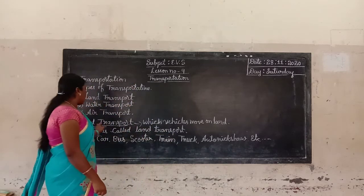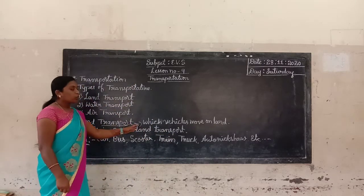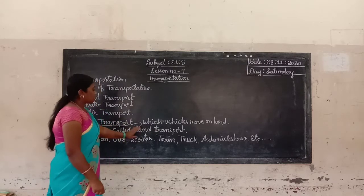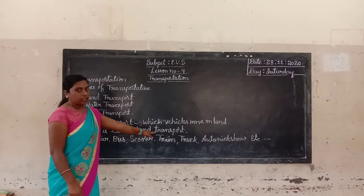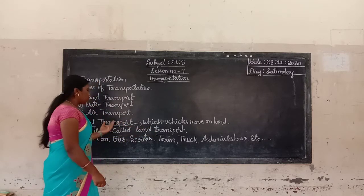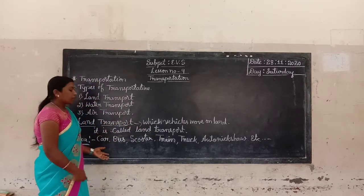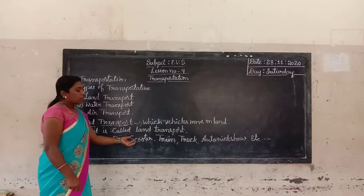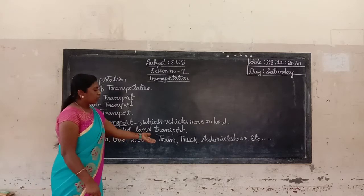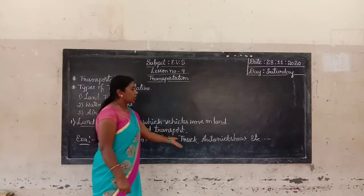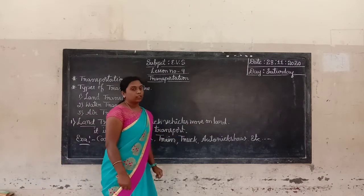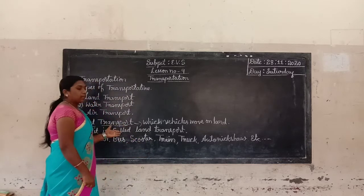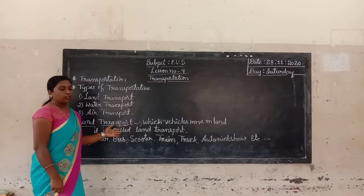Land transport means which vehicles move on land — it is called land transport. Examples of land transport: car, bus, scooter, train, truck. Land transport vehicles commonly move on wheels.